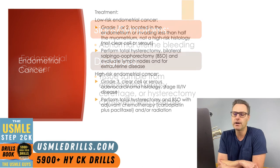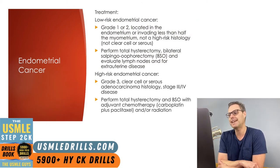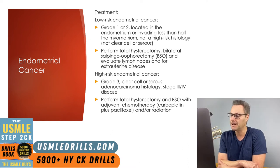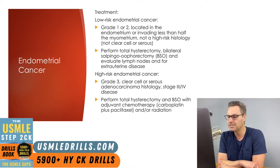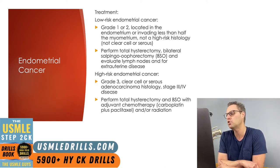As for treatment, endometrial cancer is broken up into low-risk and high-risk. Low-risk cancers are grades 1 or 2, located in the endometrium, or if invading the myometrium, invading less than half — so the cancer doesn't extend to the outer edge of the myometrium. It's well-contained, and it is not a high-risk histology, meaning it is not going to be clear cell or serous.